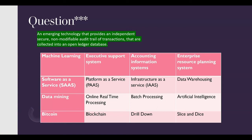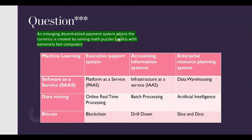The fact that it's an open ledger database with a non-modifiable audit trail makes blockchain very useful for continuous monitoring, which has great use for auditors now and in the future. So look for a question about blockchain or even Bitcoin on your next CPA BEC exam. How about another one: 'An emerging decentralized payment system where the currency is created by solving math puzzles quickly with extremely fast computers.' There's your Bitcoin — Bitcoin is an emerging decentralized payment system.